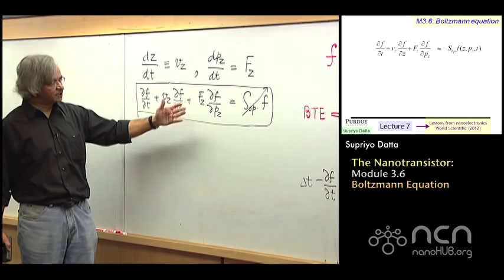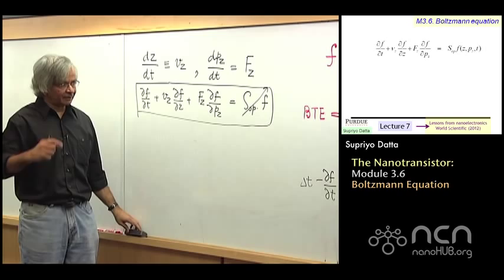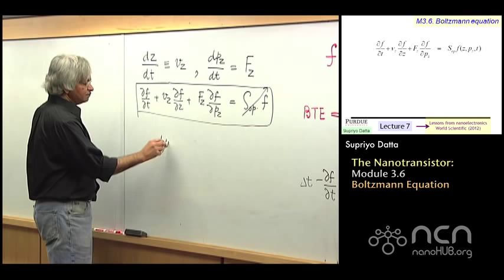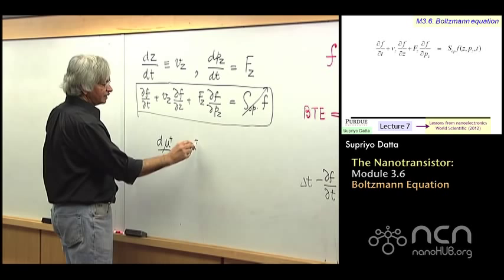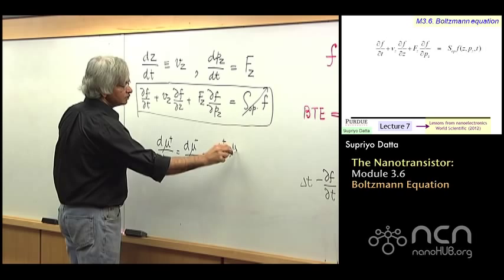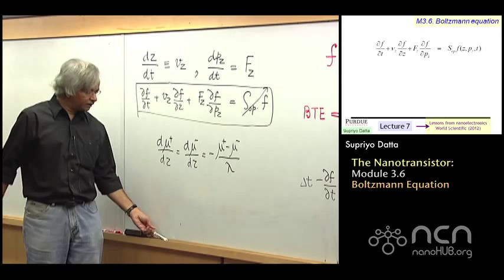And that is what we tried to do in relatively simple, with simple approximations. We didn't really do this full thing. So, in my last lecture, I had written down an equation that looks something like d mu plus dz equals d mu minus dz equals minus mu plus minus mu minus over lambda.